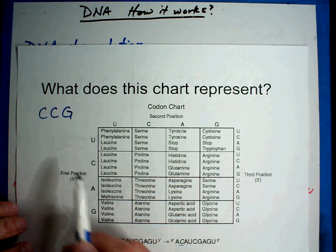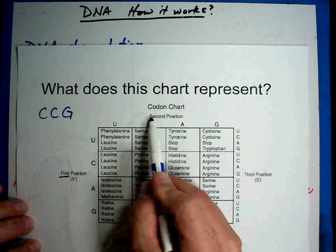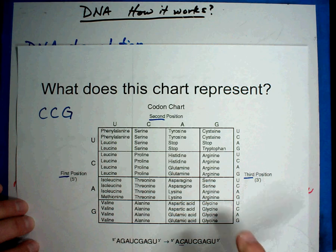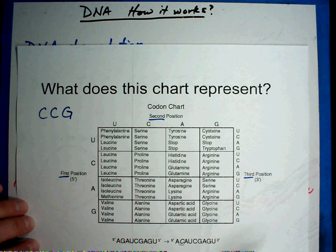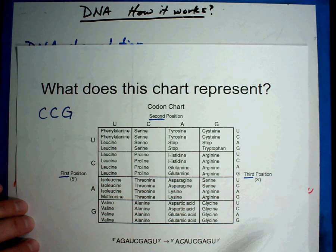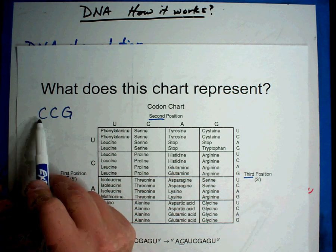Here's how you do it. You find the first letter, the second letter, and then the third letter. And they always give you this chart. You do not have to memorize it. They'll print it for you. All you have to do is use it.